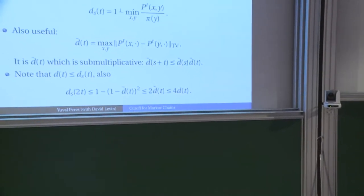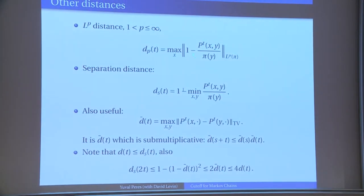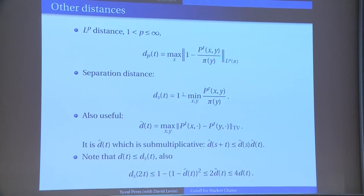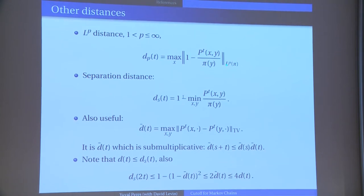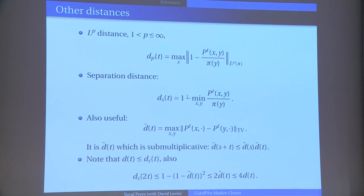A few other distances will come up. Instead of L1 distance, one can also look at Lp distance, and the right normalization is to look at the density — we look at P^t(x,y) divided by pi(y), and we look at the Lp distance between 1 and this ratio, Lp with respect to pi. The most useful are p=1, 2, and infinity. For p=1, you just get the L1 distance, which is twice the total variation. L-infinity distance measures the maximum deviation of the density from 1.